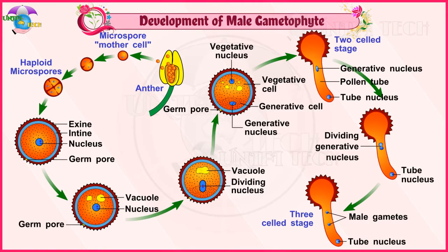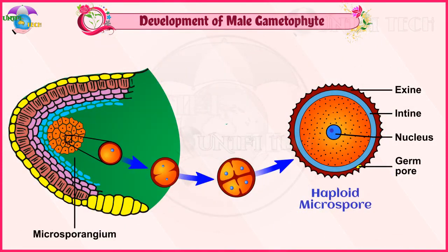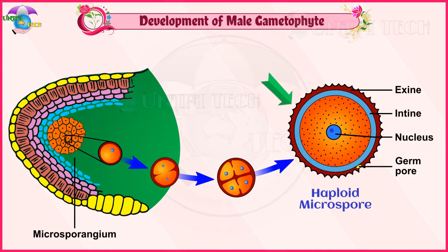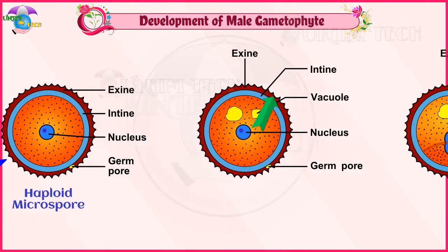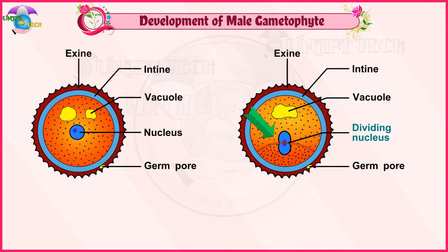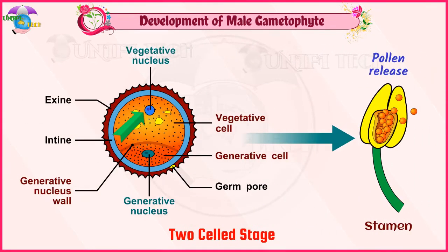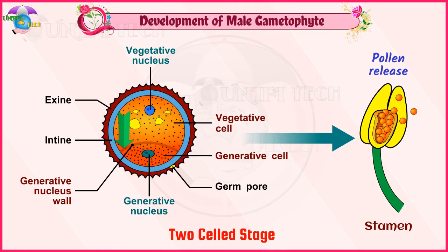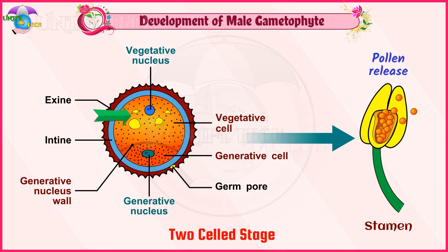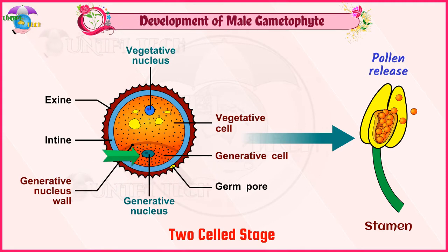Development of male gametophytes. The microspore is the first cell of the male gametophyte and is haploid. The development of male gametophytes takes place while they are still in the microsporangium. The nucleus of the microspore divides to form a vegetative and a generative nucleus. A wall is laid around the generative nucleus, resulting in the formation of two unequal cells — a large vegetative cell with abundant food reserve and a small generative cell. At this two-celled stage, the pollens are liberated from the anther.